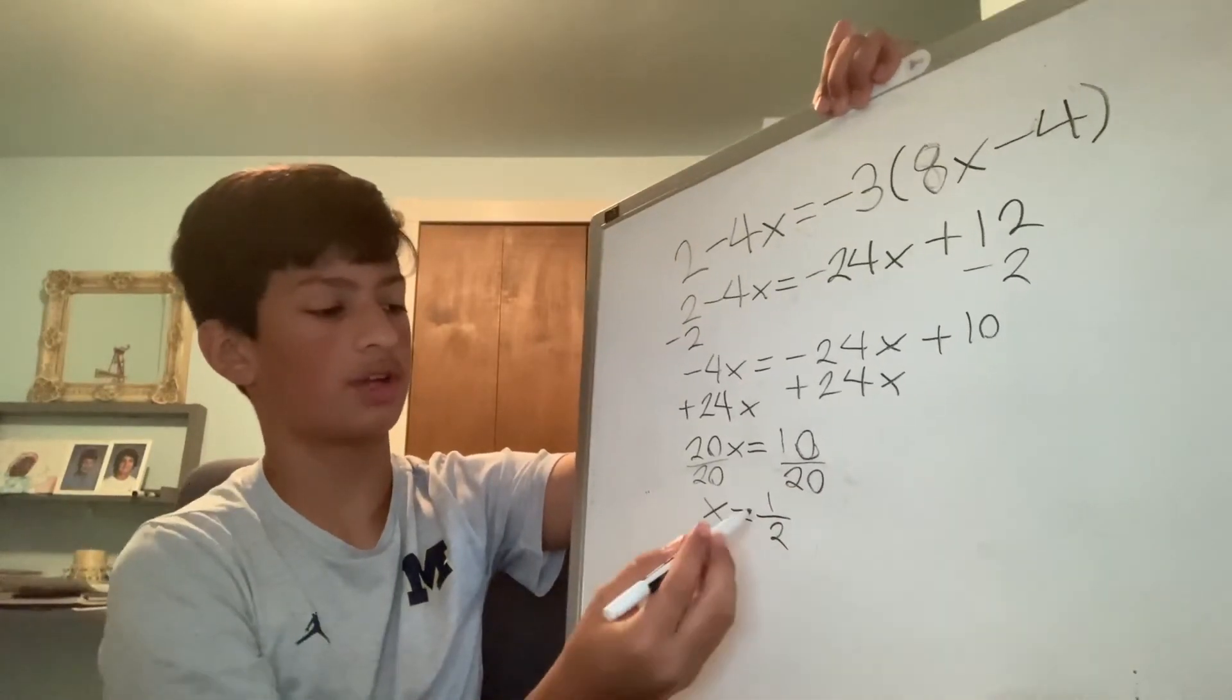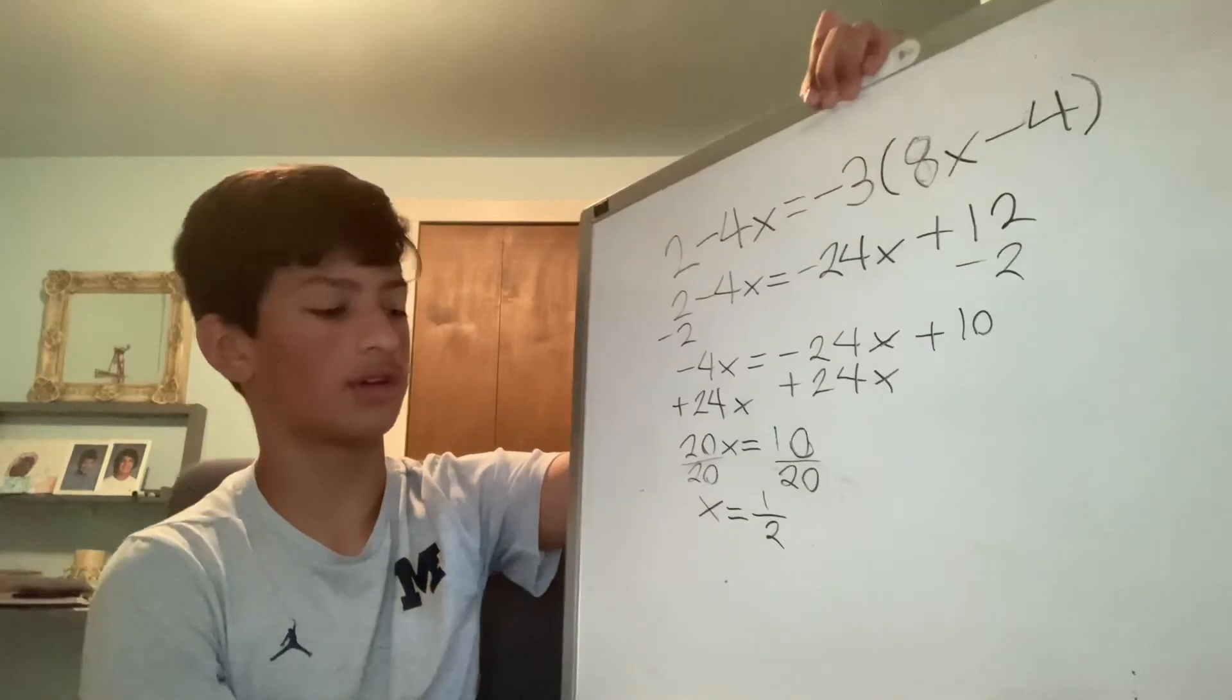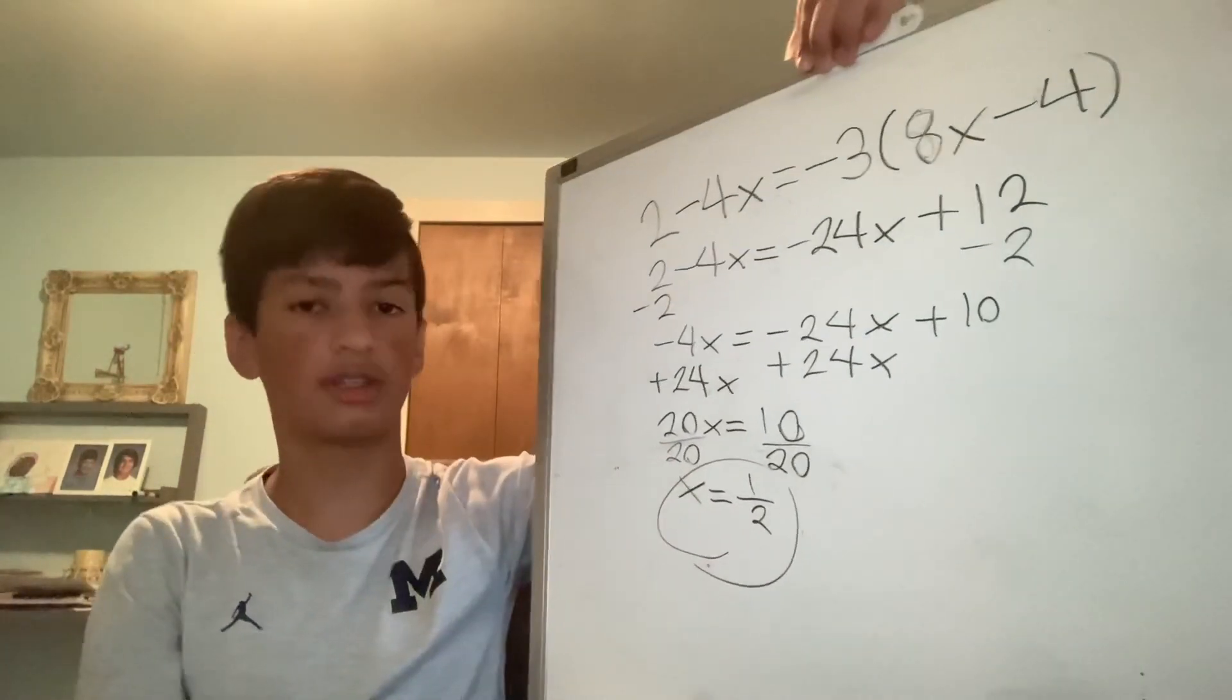We now have a variable term and a constant term, and we have our solution. x equals 1 half.